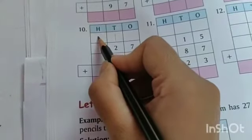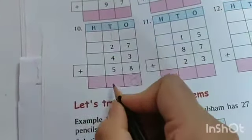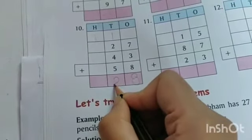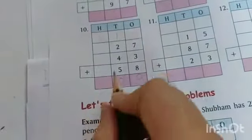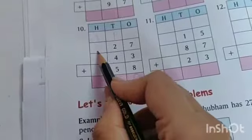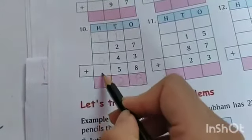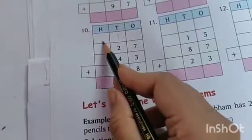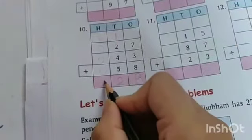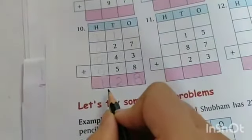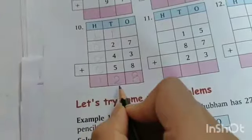So 1 is going to hundreds column as carry and 2 we write here in the tens column. So here we assume 0. Only 1 in the hundreds column, so we write here 1. The answer is 128.